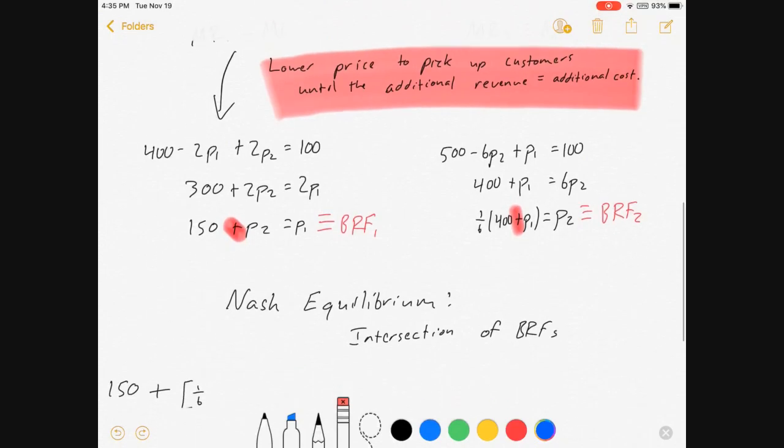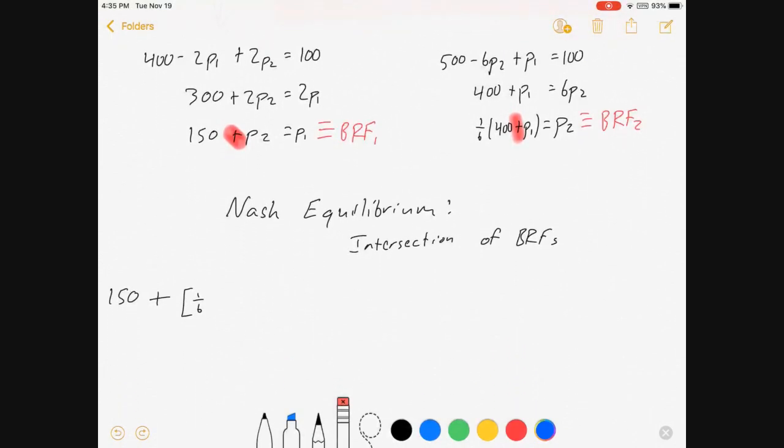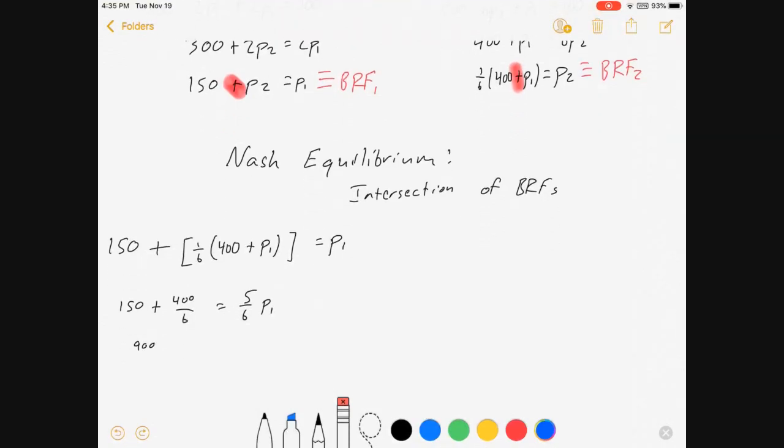By the way, we're going to start with best response 1. So, 150 plus price 2. Price 2, though, is 1/6th times 400 plus P1. Notice that there in the brackets is best response for firm 2. All of that equals P1. I've substituted BRF2 into BRF1. And we can simplify that a little bit. We get this, we get that, and price 1 equals $260.